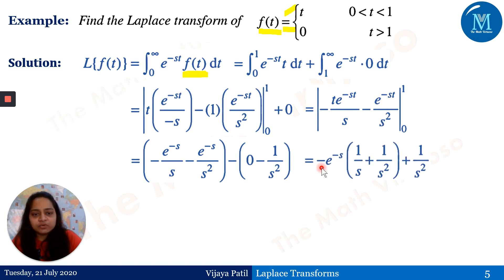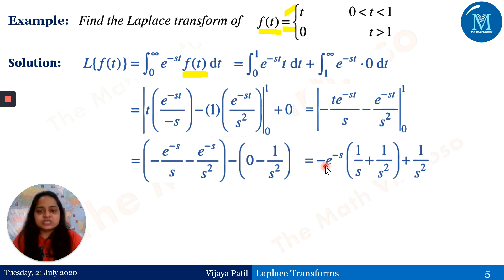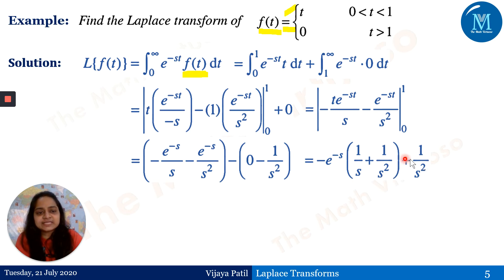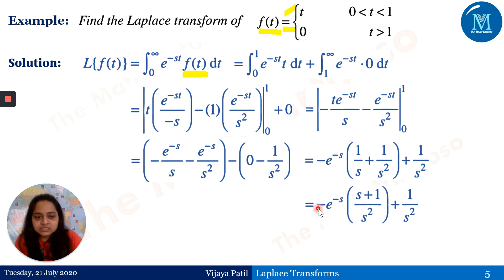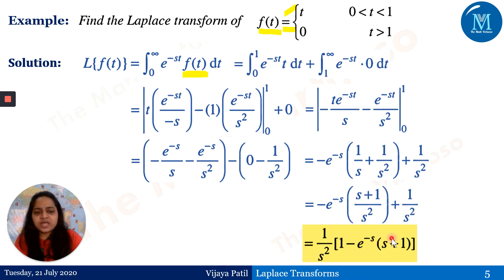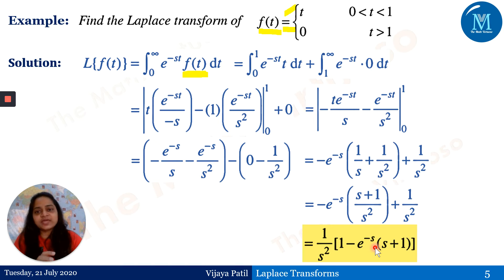Factoring out e^(−s), the expression becomes −e^(−s)(1/s + 1/s²) + 1/s². Taking 1/s² outside the bracket gives the final simplified answer. Whenever dealing with the Laplace transform or Fourier series, you need to be very thorough with integration. The Laplace transform is actually a generalized case of the Fourier series.